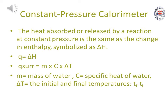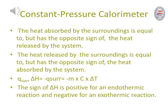So q surroundings equals m times c times delta T. The heat absorbed by the surroundings is equal to, but has the opposite sign of, the heat released by the system. Also, the heat released by the surroundings is equal to, but has the opposite sign of, the heat absorbed by the system. So the enthalpy change for the reaction can be written as: q system equals delta H.